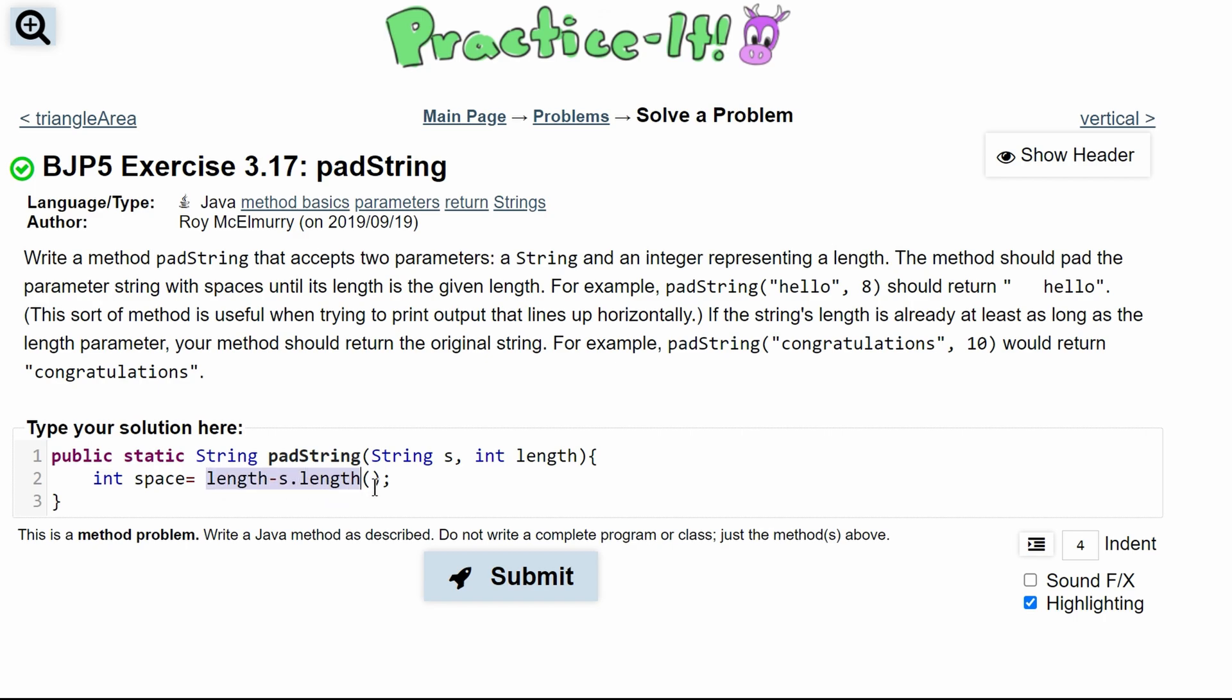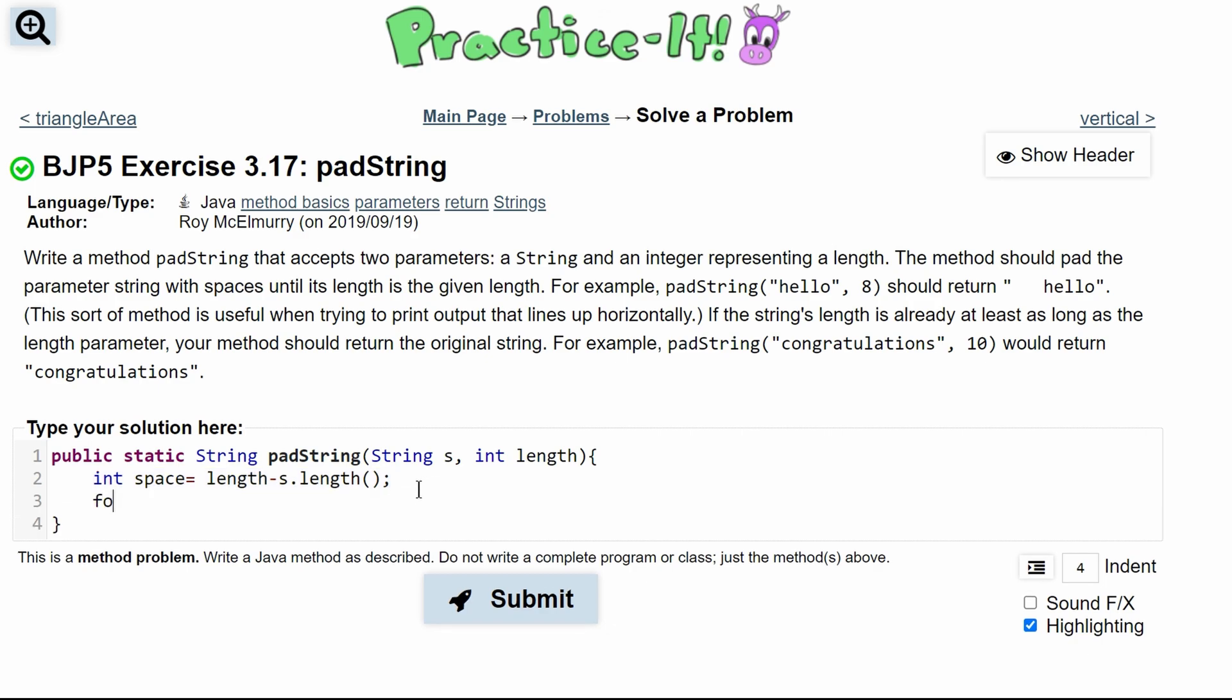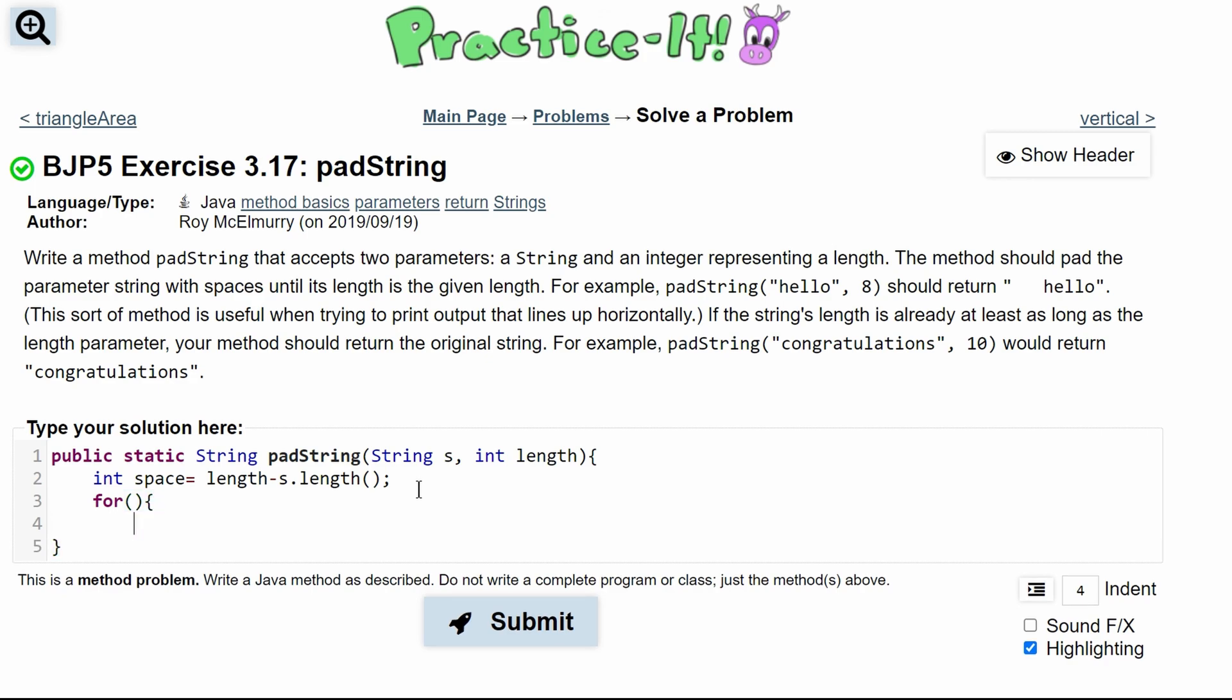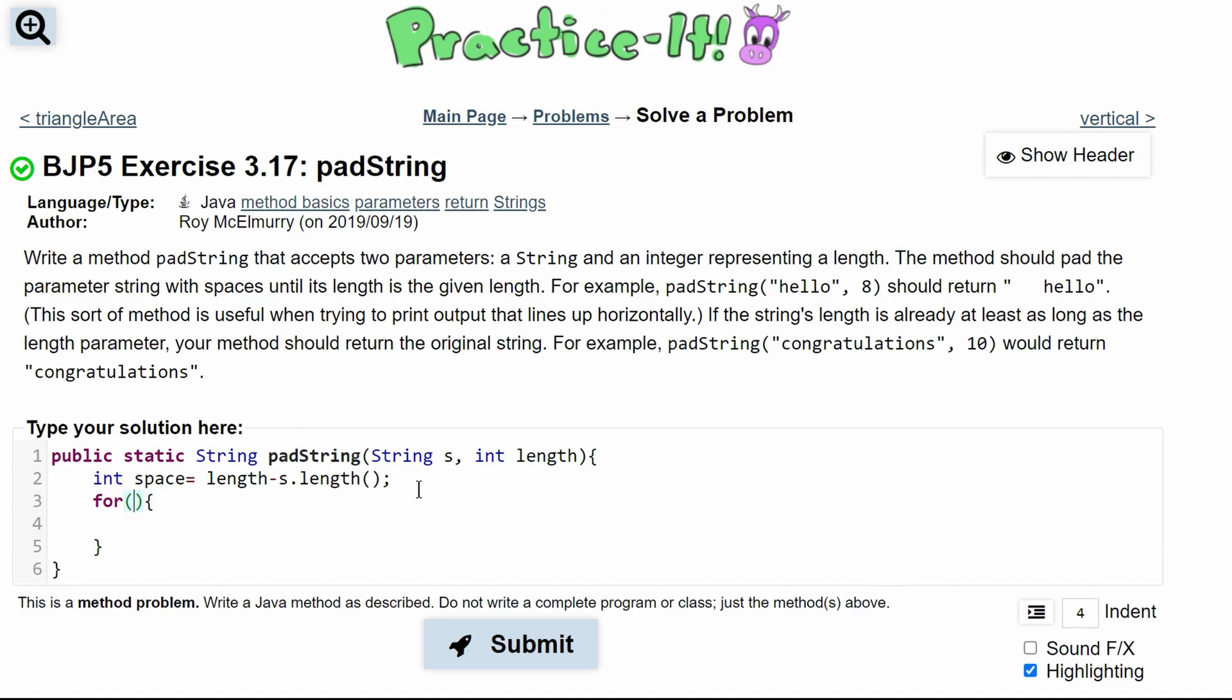Otherwise, we should probably use Math.abs. But since length is always going to be greater than or equal to the length of the string, this is our space holder right here. Next, we're going to have a for loop that adds these spaces into our return statement. So we are going to have int a equals zero, and this is going to run as long as a is less than space, and we're just going to do a++.